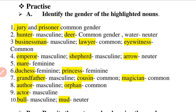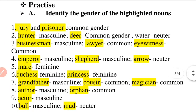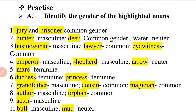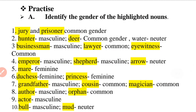Starting from page 18, the task is Practice: Identify the gender of the highlighted nouns. This is very important. You should open your book so you can write the answers. If you want to download the video from YouTube, you can do so, and it will remain with you permanently. Now let's begin.